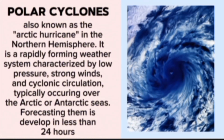Polar cyclone, also known as the Arctic hurricane in the northern hemisphere, is a rapidly forming weather system characterized by low pressure, strong winds, and cyclonic circulation, typically occurring over Arctic and Antarctic seas.